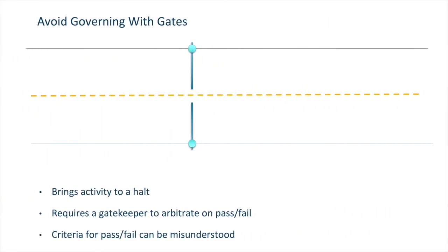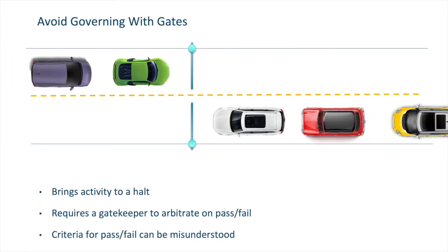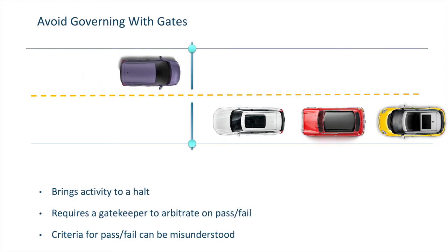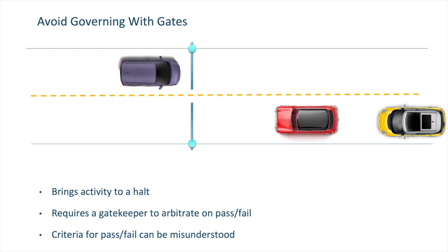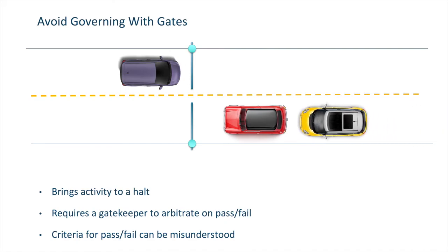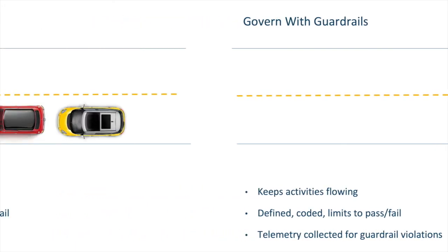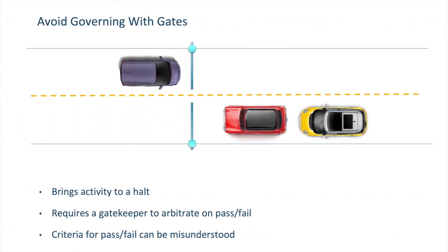Before we dive into the guardrails, let's talk about why we talk about guardrails. Traditionally, we tend to govern with gates. In a gating style of governance, what you're really doing is bringing forward a package of evidence in which you're demonstrating compliance, and a gatekeeper would then determine if you've met the criteria for pass or fail. In a gating type environment, it's often very people intensive, and the understanding of what constitutes pass or fail can differ from person to person. Because you do need gatekeepers, it tends to be a very person-intensive process — work stops, and you need a gatekeeper to determine if you're able to proceed or not.